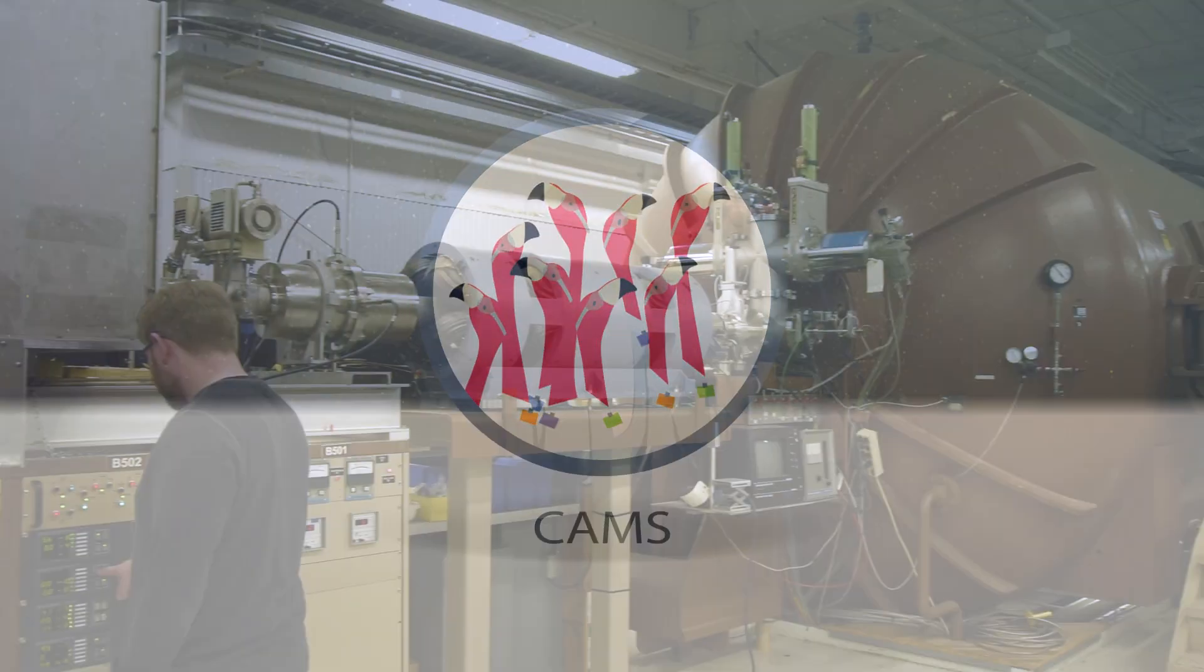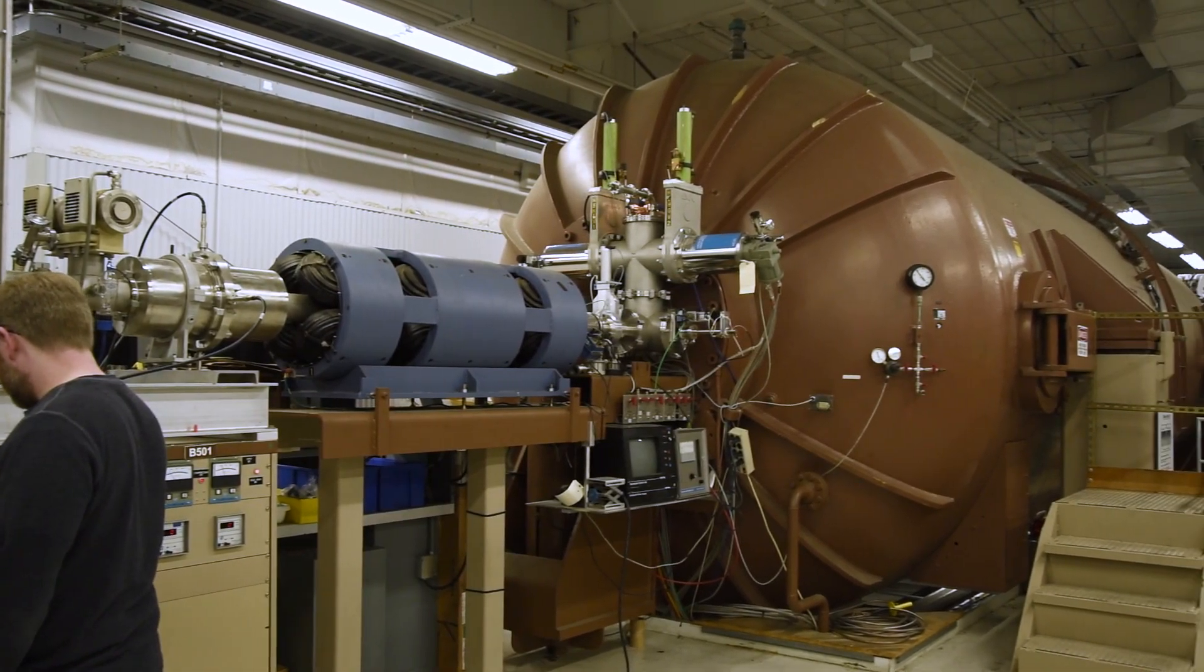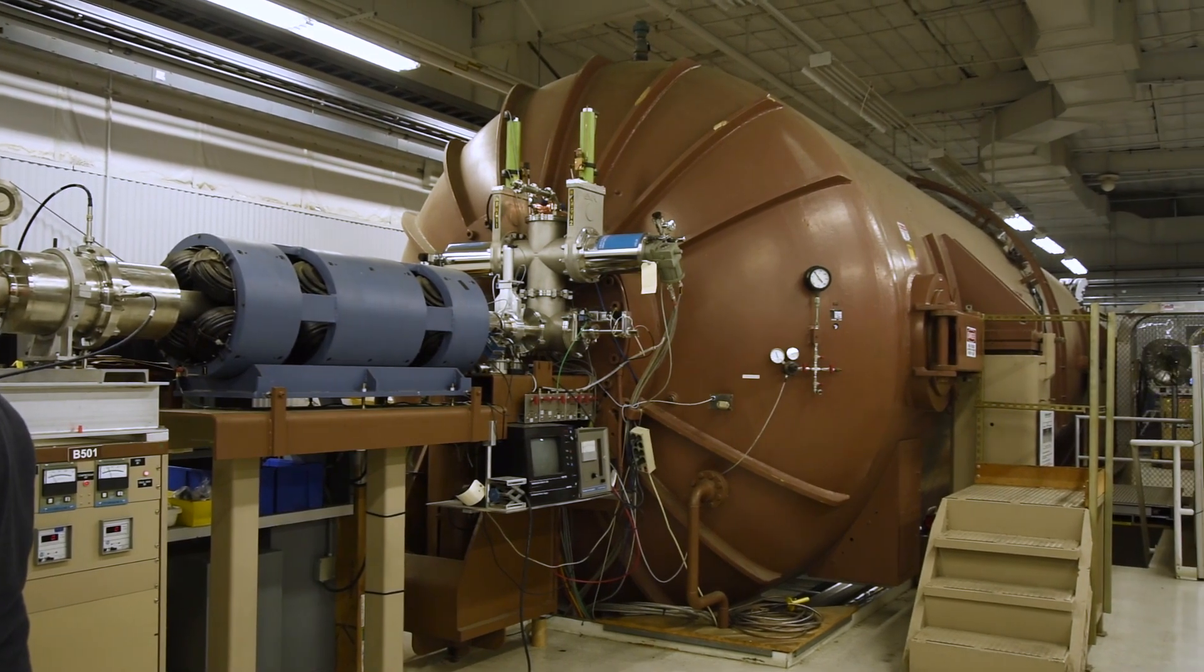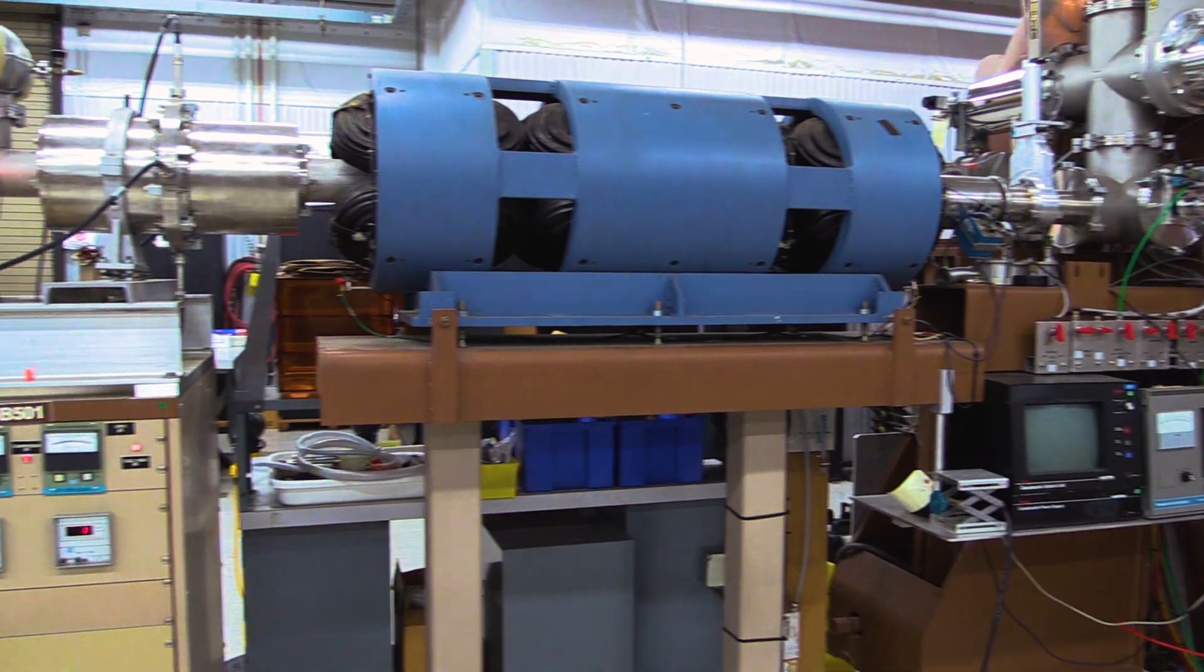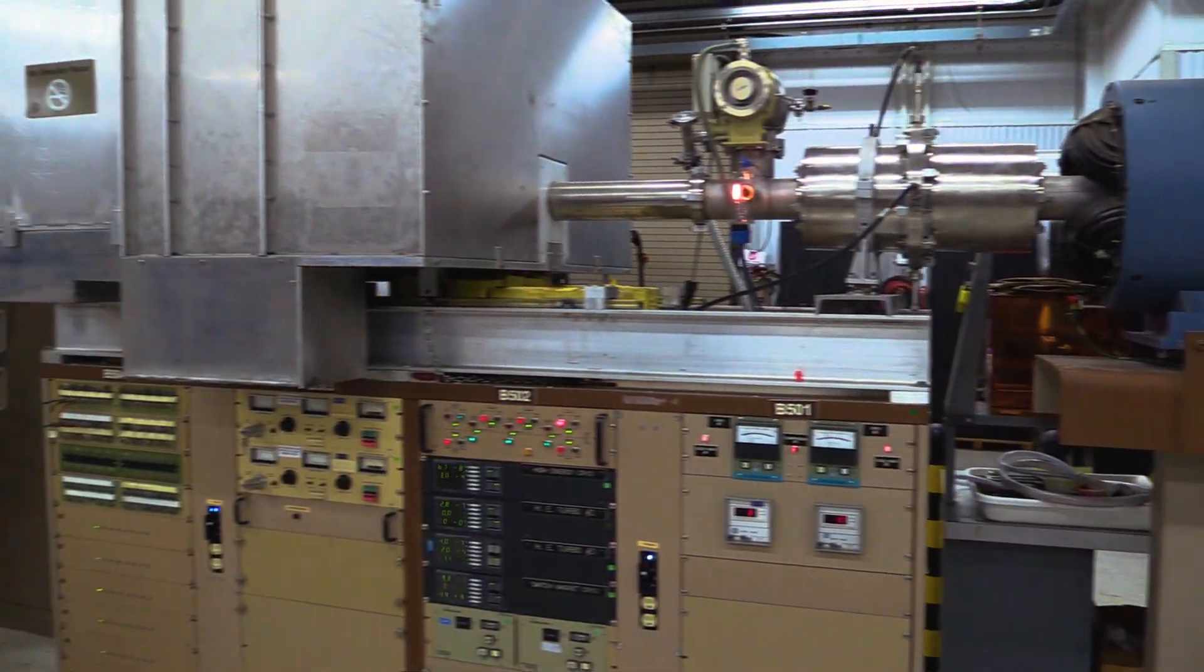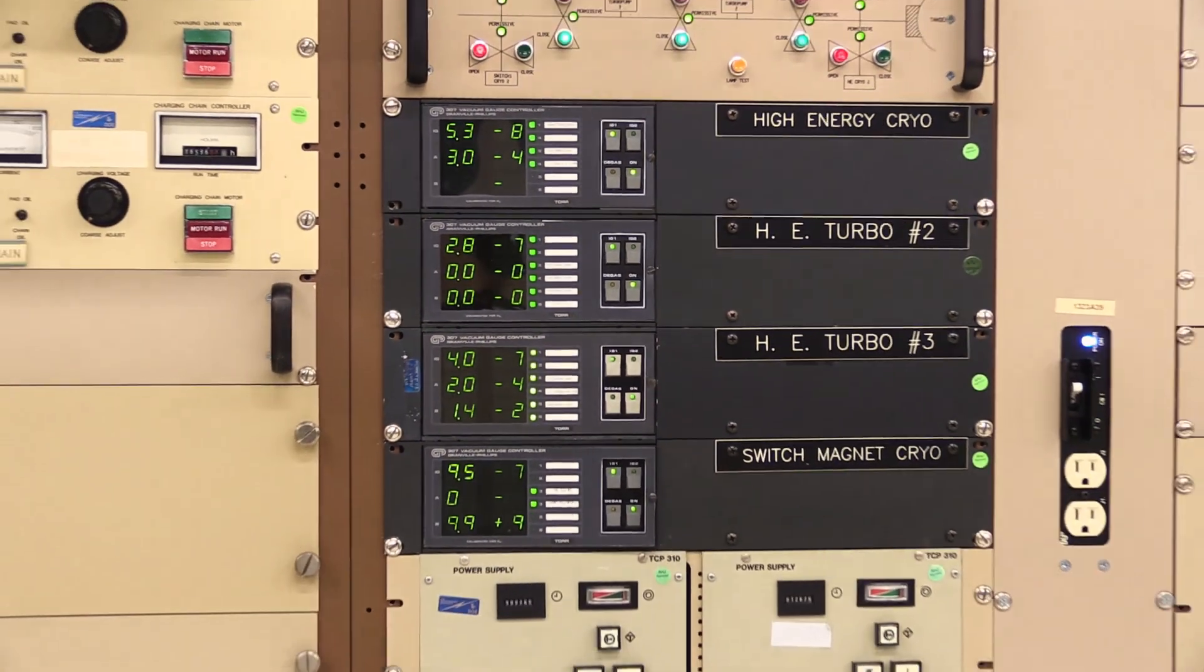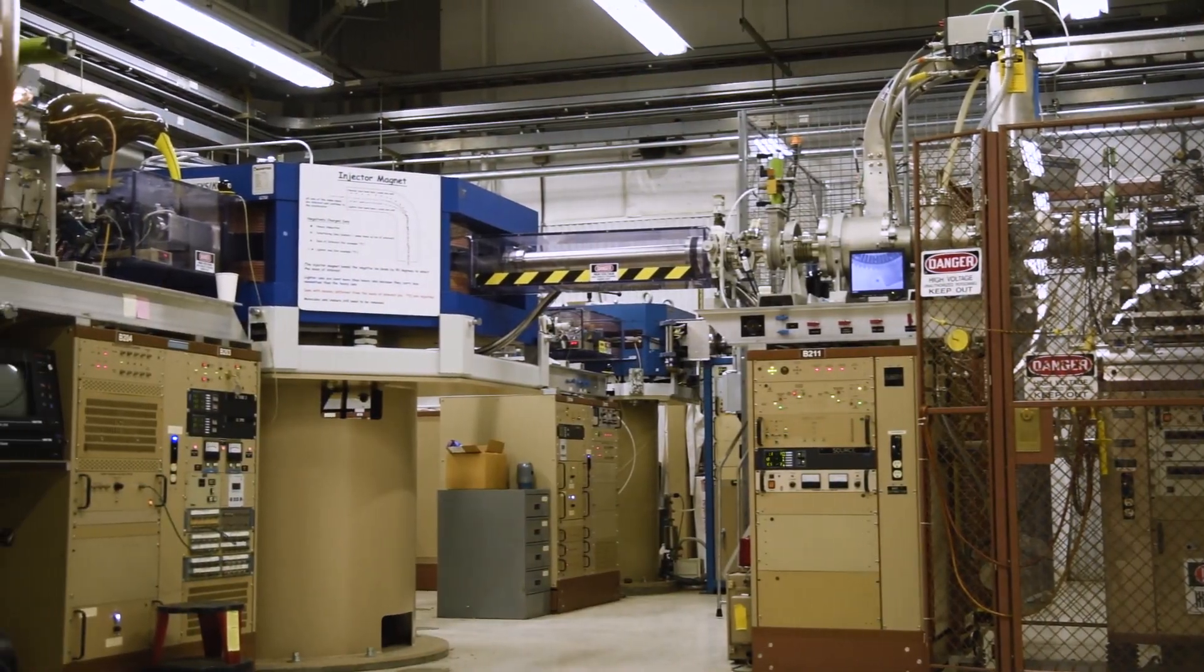The largest instrument we have at CAMS is the large brown tank behind me. It's the FN Accelerator. It allows us to take the ions from our samples and accelerate them up to tens of millions of electron volt energies, and that allows us to filter them through the magnets and other things we have and get them down to the point where we're just counting the single ions that we're interested in.